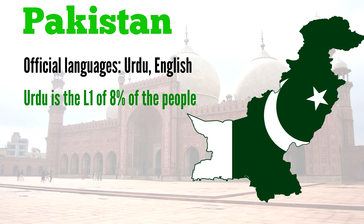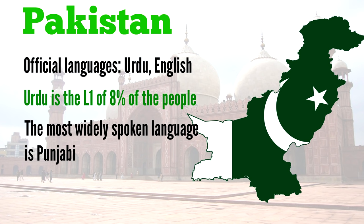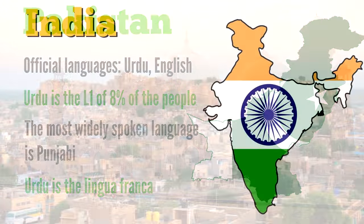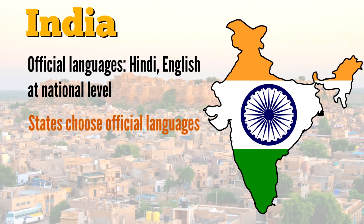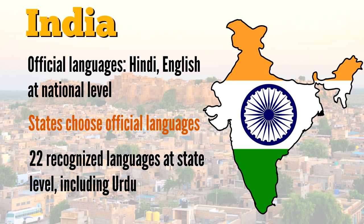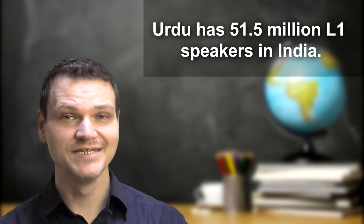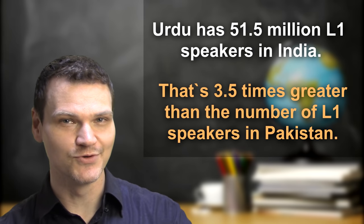Of course, it would be a mistake to think that all Muslims on the Indian subcontinent speak Urdu and that all Hindus speak Hindi. For people who specifically speak Hindustani, their religion basically determines which one they speak — Hindi or Urdu. It would also be a mistake to think that Urdu is the Pakistani language while Hindi is the Indian language. Urdu is the official language of Pakistan along with English, but in fact only 8% of the population are native speakers of Urdu. Numerous other languages are spoken in Pakistan, and the most widely spoken one is actually Punjabi, but Urdu is the lingua franca and virtually everybody learns it. In India, Hindi and English are the official languages at the national level, but each state is free to choose its own official languages too. There are a total of 20 recognized official languages at the state level, and that includes Urdu. So Urdu is not just the language of Pakistan — it's also an official language in 8 states in India, including the Delhi capital region. It is spoken by 51.5 million native speakers in India, and that's 3.5 times greater than the number of Urdu native speakers in Pakistan.